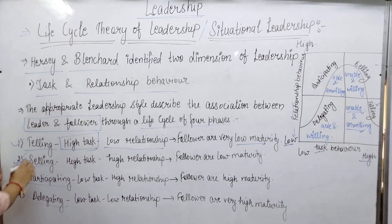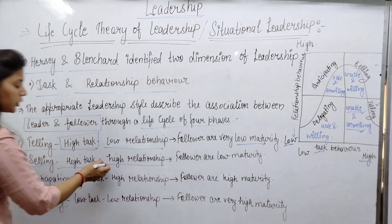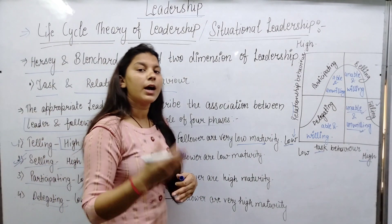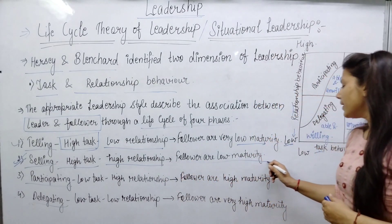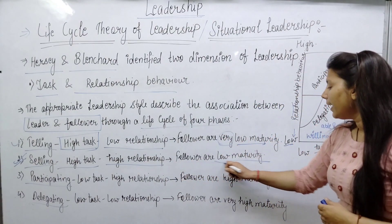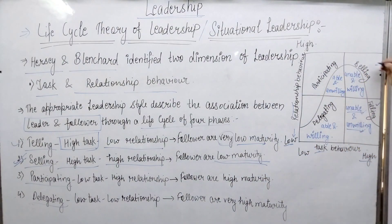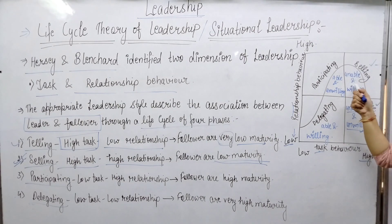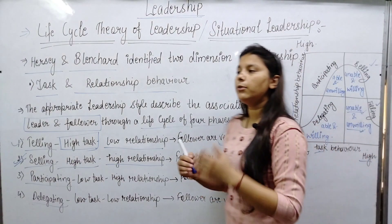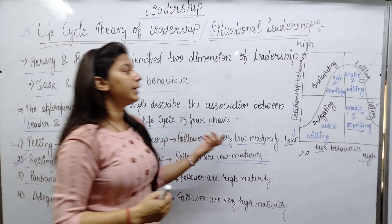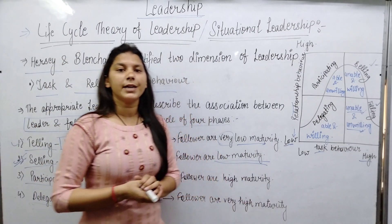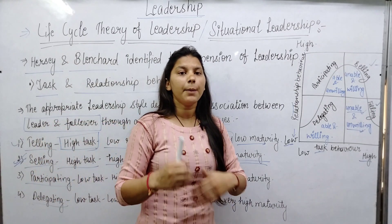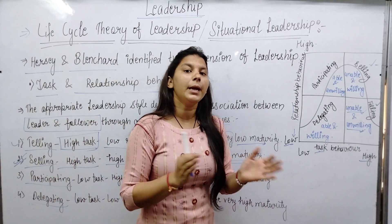Next is Selling, which involves high task and high relationship. This applies when followers are of low to moderate maturity. In Selling, the followers are unable but willing — they don't yet have the ability to do the work, but they are motivated and eager to do it.